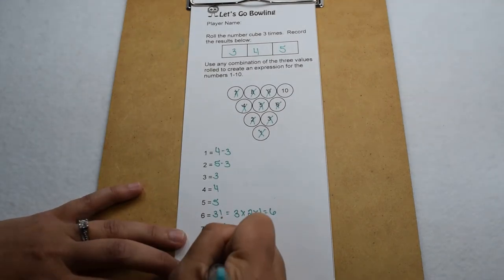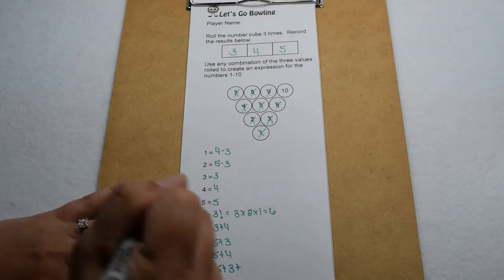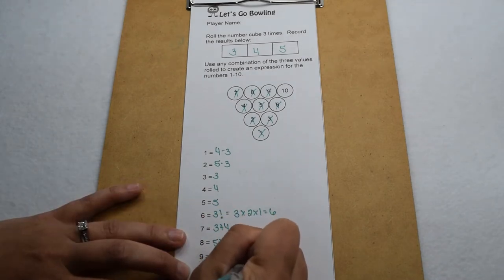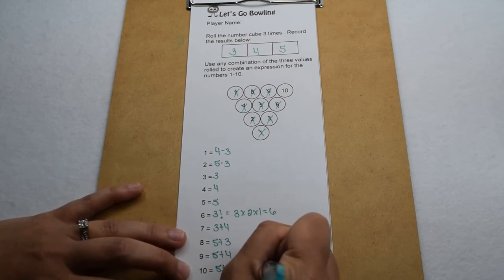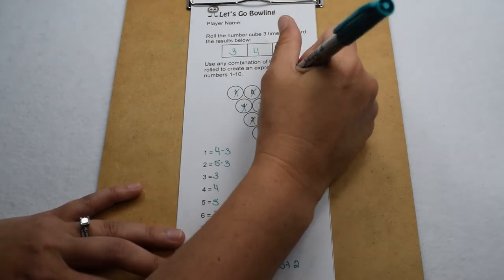Now for ten, we know if we do five plus three, that's going to give me eight, but I only need two more to get to ten. This means I'm going to work in a square root. I'm going to take the square root of four. The square root of four is two, so that means I have five plus three plus two, that gives me ten.